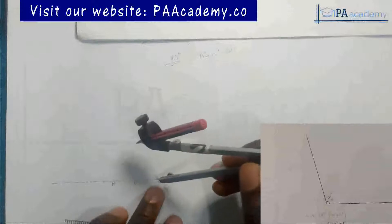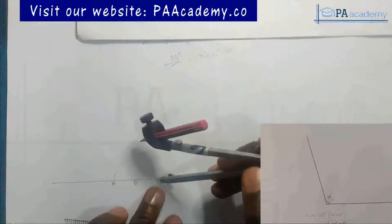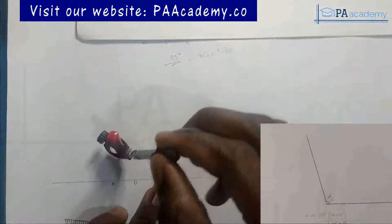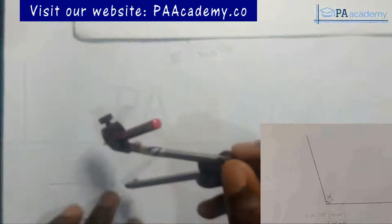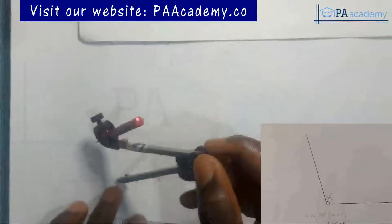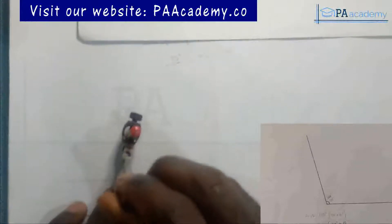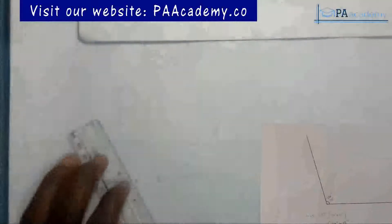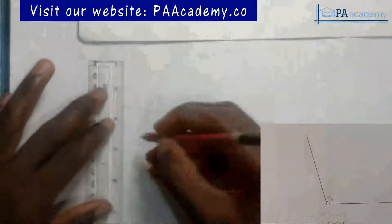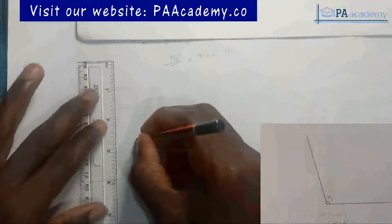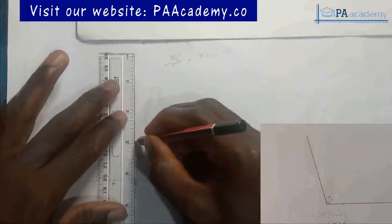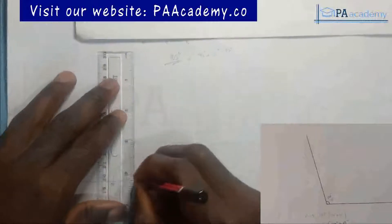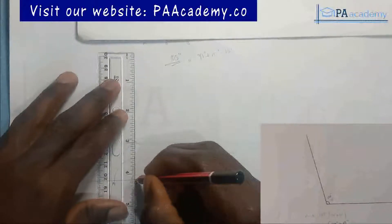I bring in my compass at any convenient length, place it on point B, and draw an arc. With the same length I come to point A and draw another arc. From the point of intersection I draw a vertical line to come and touch point O.